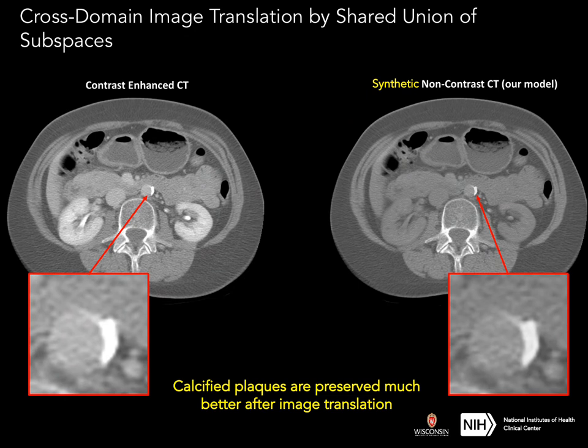In this slide, we show the image translation results by our new model. On the left is the original contrast-enhanced CT, and on the right is the translated non-contrast CT. If we look into the calcified plaque in these two images, we can see that the calcified plaque structures are preserved much better in our model, and the pixel brightness is very similar in the two images.